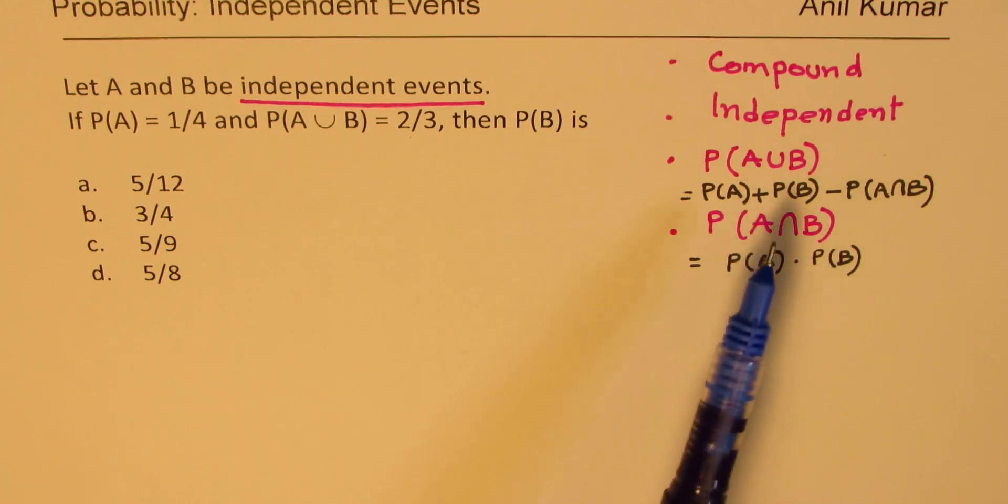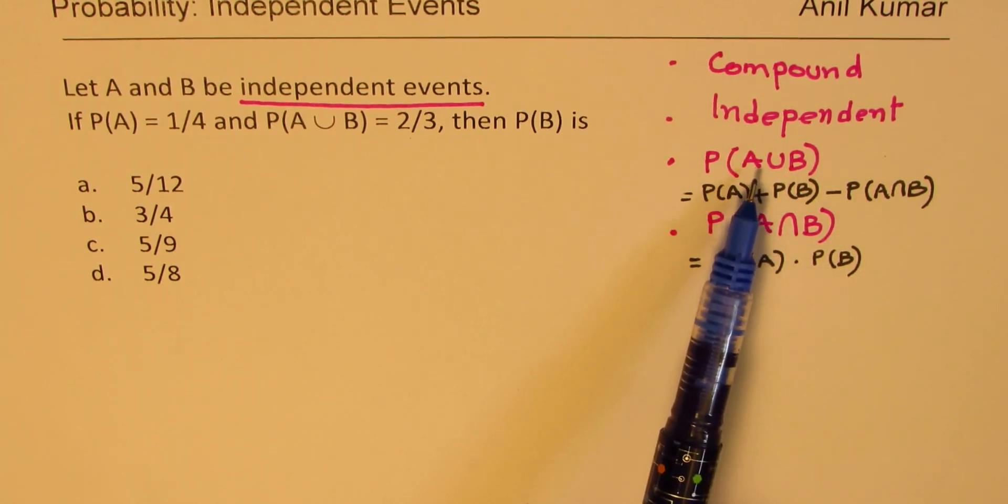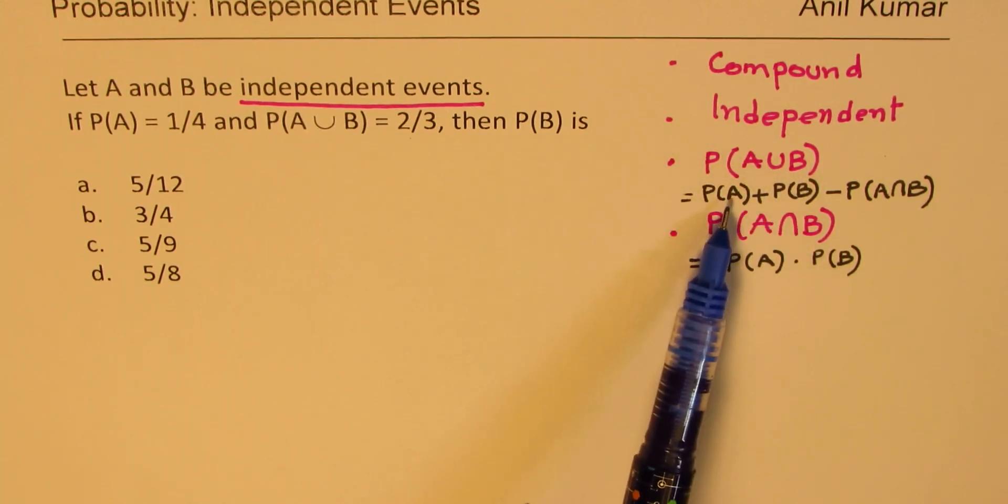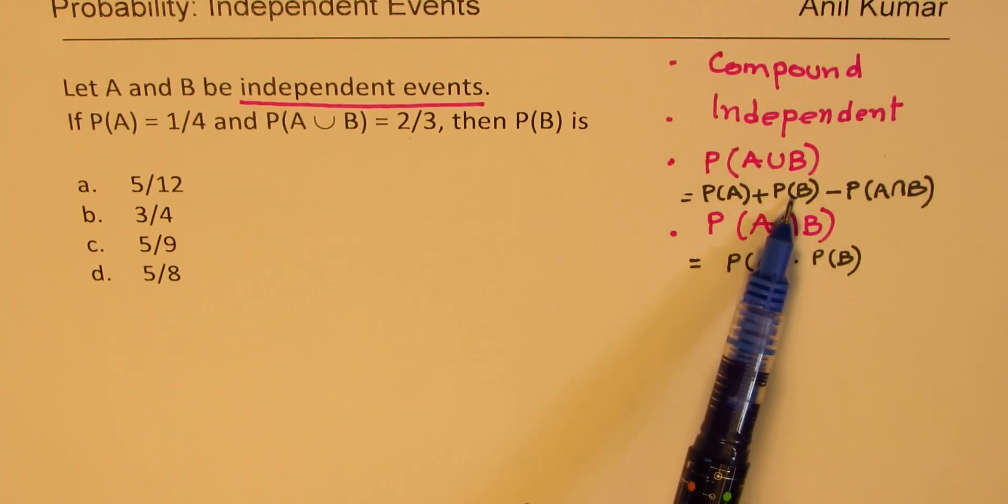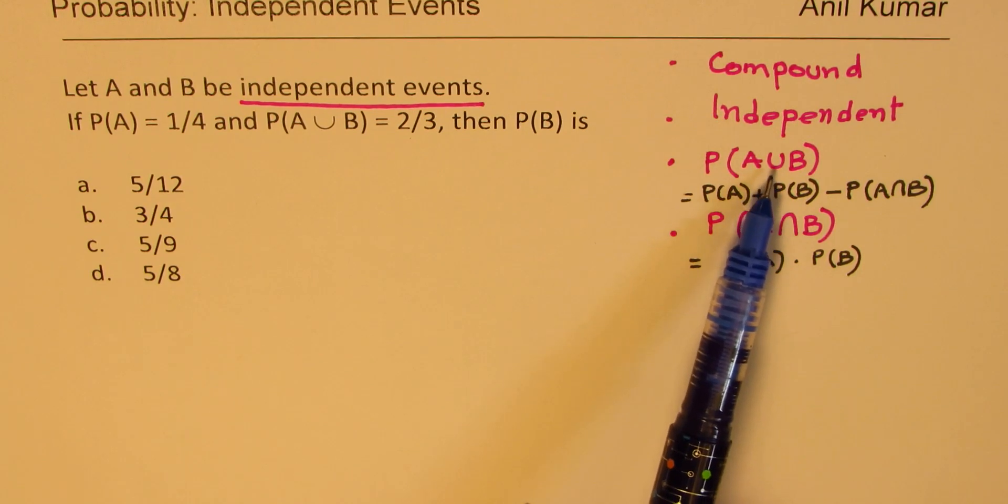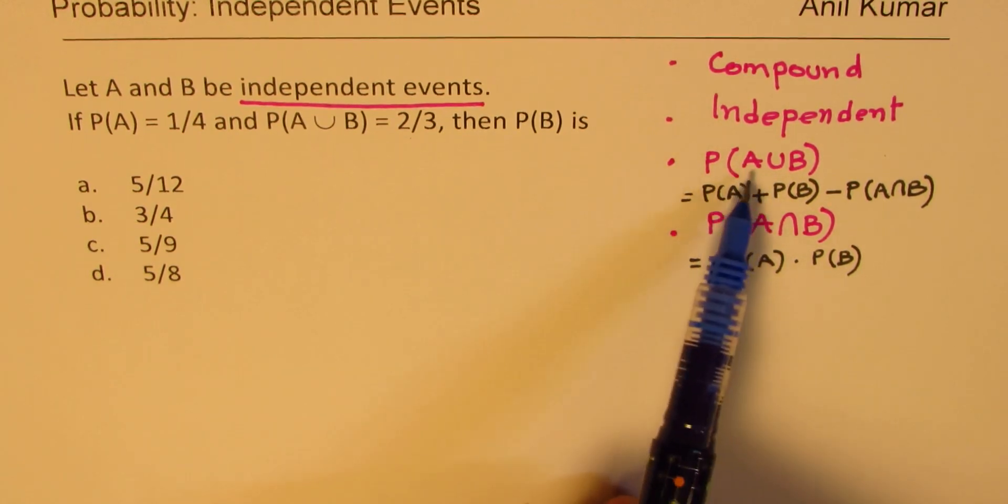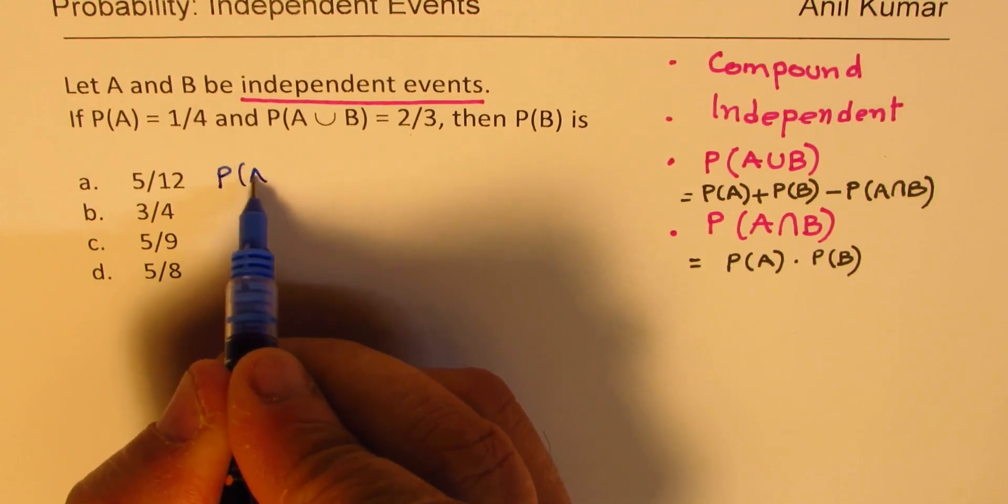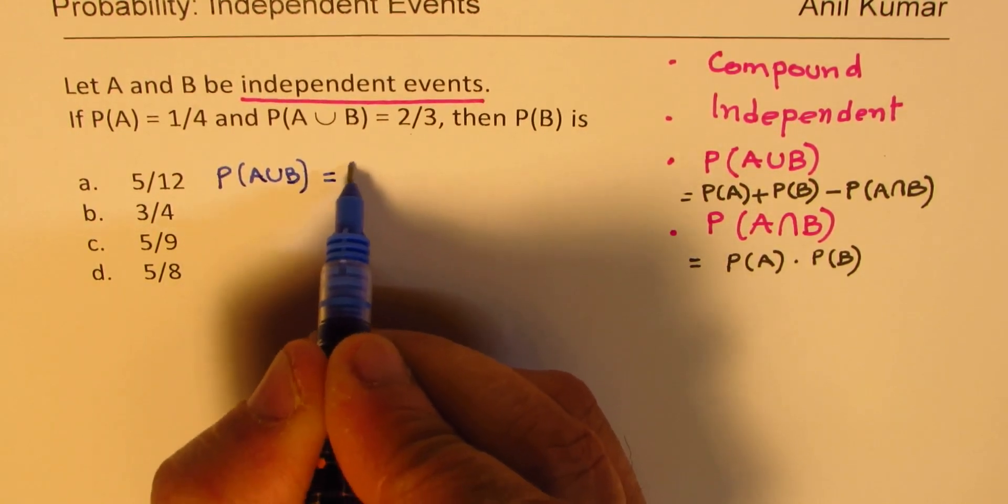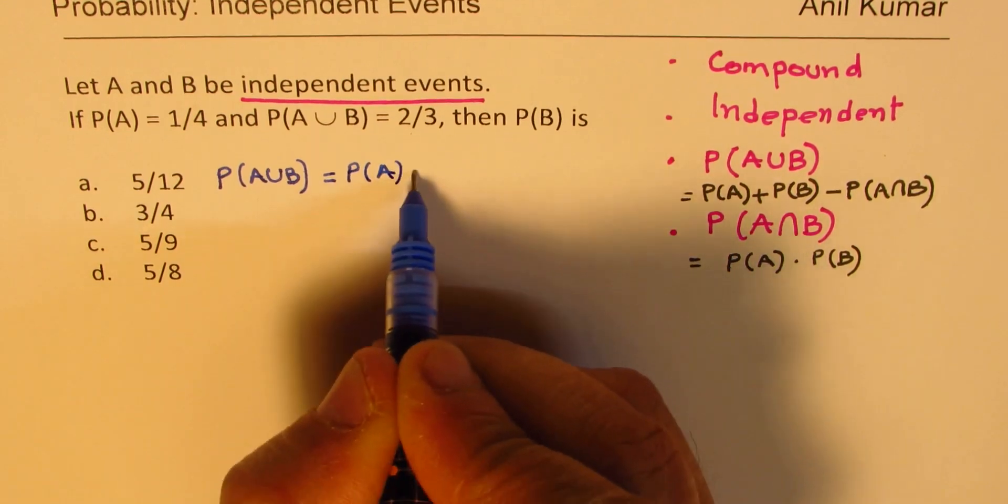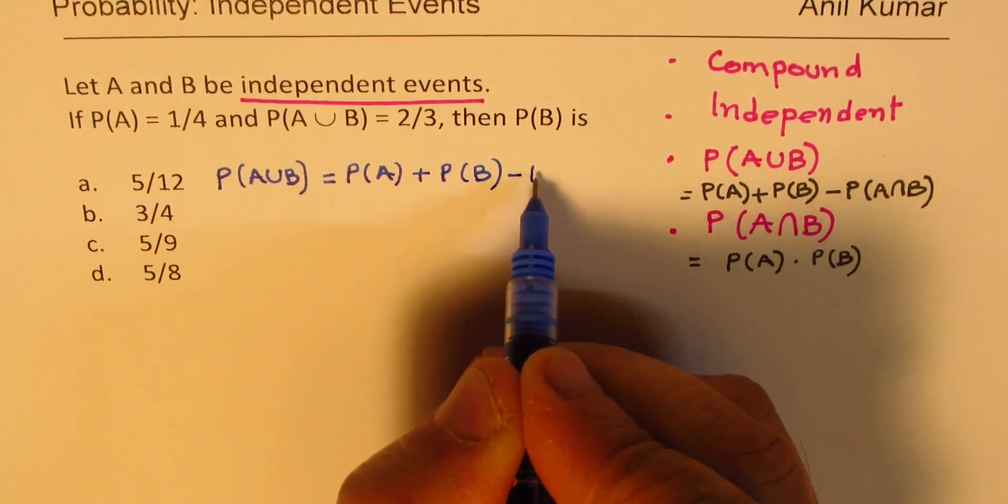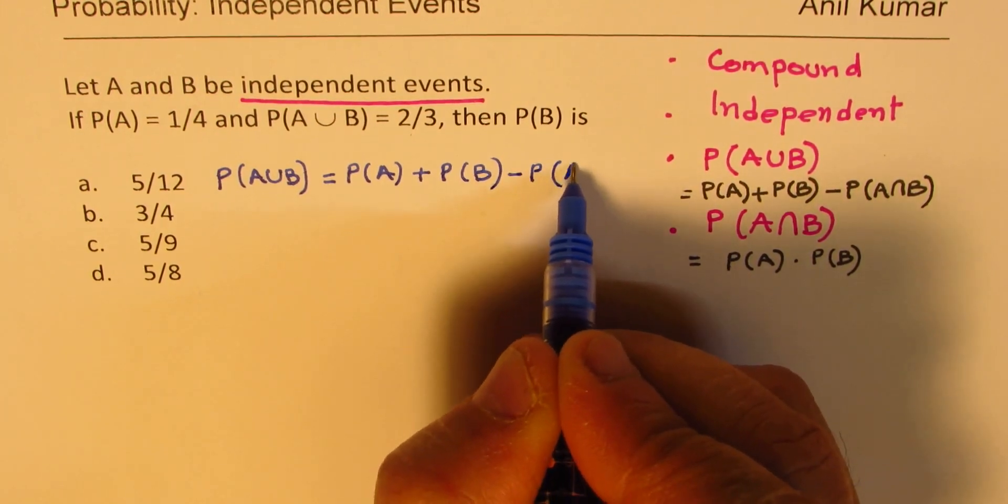We could actually start with this particular equation. We are given probability of A union B. We are given probability of A. We need to find B. So, we will begin with the union statement. The probability of A union B is basically equal to probability of A plus probability of B. Take away probability of their intersection. A and B.